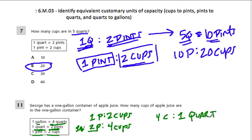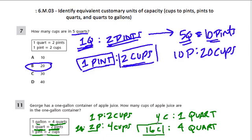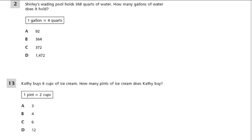So if four quarts are in a gallon — four times more than one quart — four times more cups will be in a gallon. So 16 cups will be in a gallon. And that's the basic idea of all these problems. Let's look at some more.